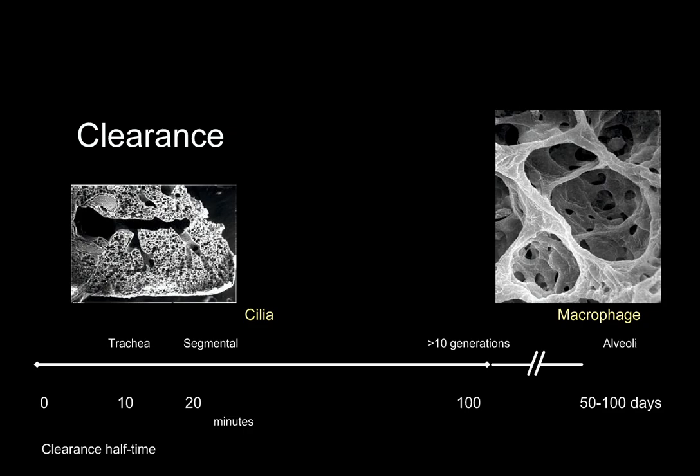Deposition is not the whole story — particles once deposited are cleared. From the nasopharynx down to the terminal bronchiole, cilia are remarkably efficient in removing particulate material, such that at the level of the terminal bronchiole, the smallest ciliated airway in the lung, the clearance half-time is on the order of 100 minutes. If it takes 4½ half-lives to remove nearly all particles, then the conducting airways are cleared within 8 hours.